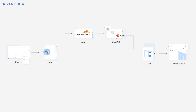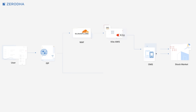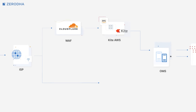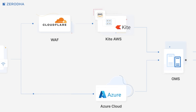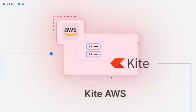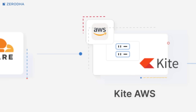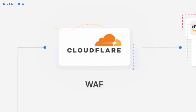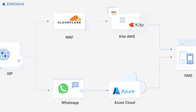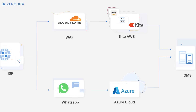Kite Backup is entirely different. It's built on Microsoft Azure cloud infrastructure with no shared components with Kite — no shared AWS, no shared Cloudflare. Nothing. It uses WhatsApp as the interface, which has its own robust infrastructure that's completely independent of our trading systems.